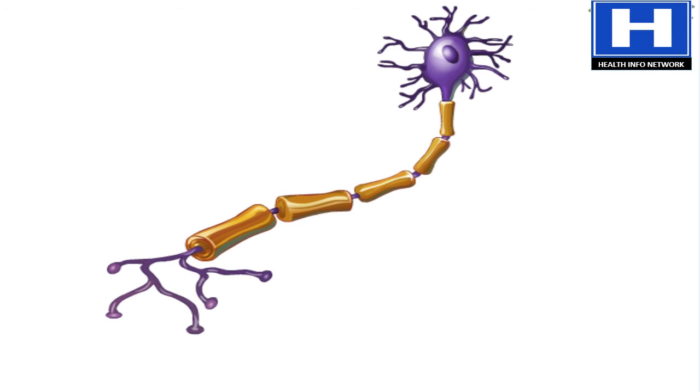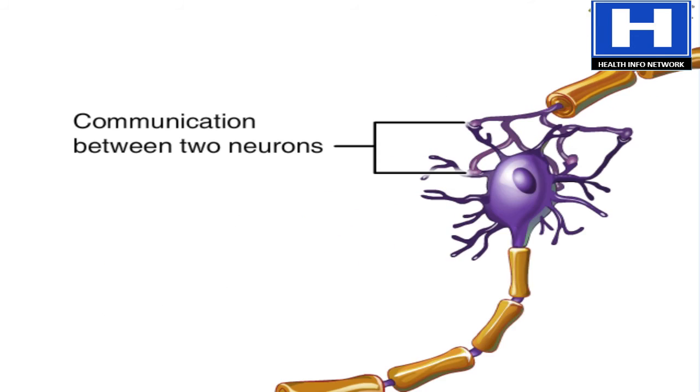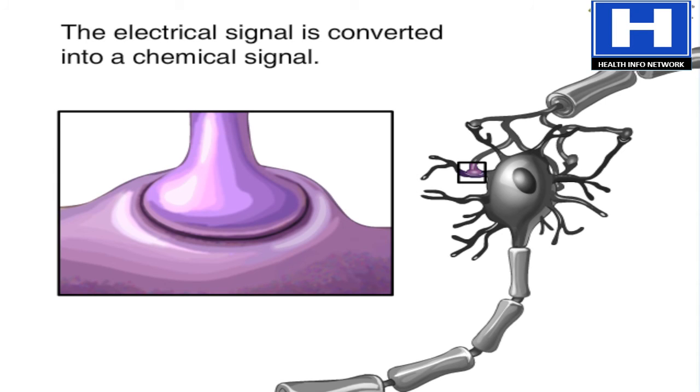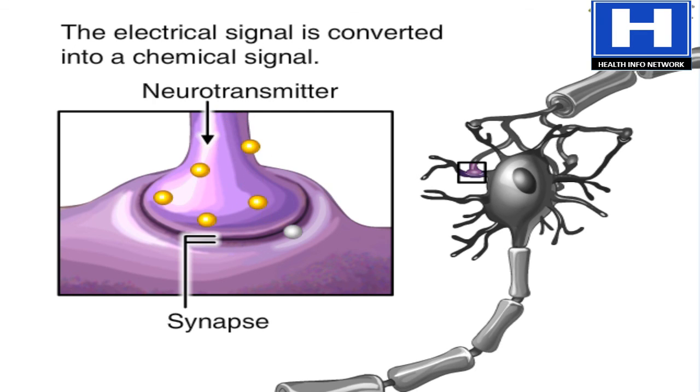The operation of the nervous system depends on how well neurons communicate. For an electrical signal to travel between two neurons, it must first be converted to a chemical signal. Then it crosses a space about a millionth of an inch wide. The space is called a synapse. The chemical signal is called a neurotransmitter.